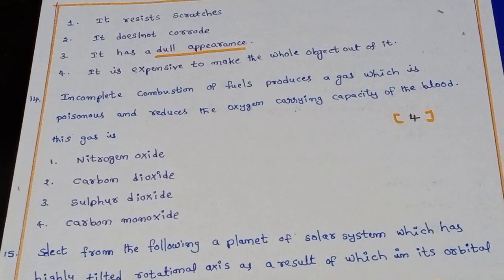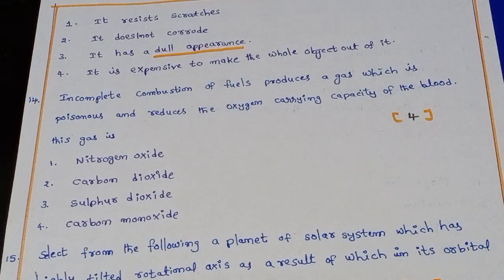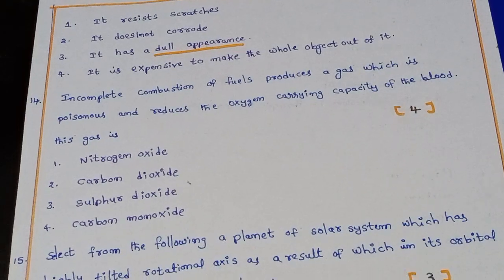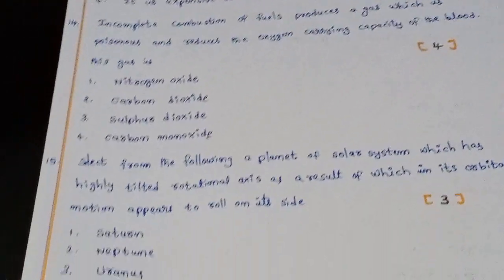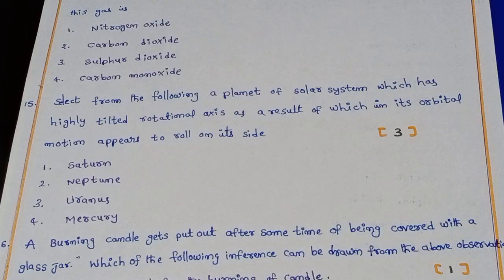Question 14: Incomplete combustion of fuels produces a gas which is poisonous and reduces the oxygen-carrying capacity of the blood. The right answer is carbon monoxide — option four is the right answer.